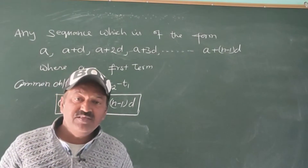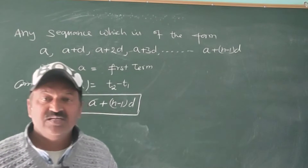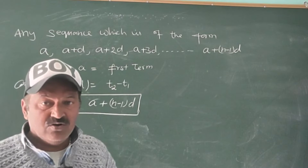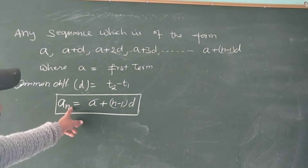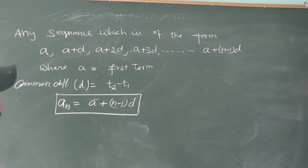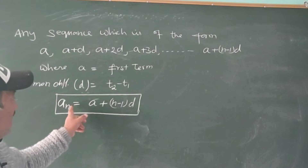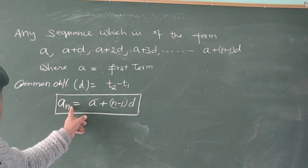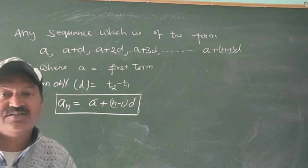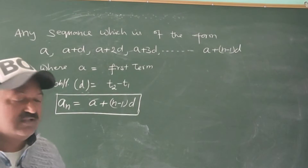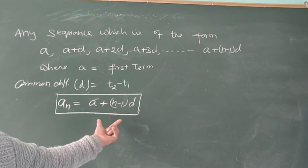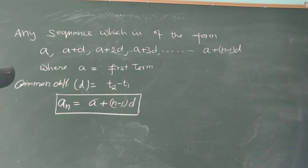The general term is the term by virtue of which we can find any Nth term. In order to find the first term, we put N equal to 1. In order to find the second term, we put N equal to 2. We can find any term from the general term of the sequence.